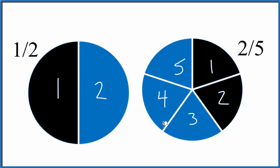When we look at this, we can see the shaded portion here is smaller. Over here the one half is larger, so we can say that one half is larger than two-fifths.